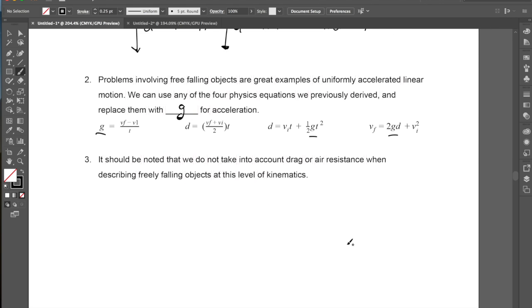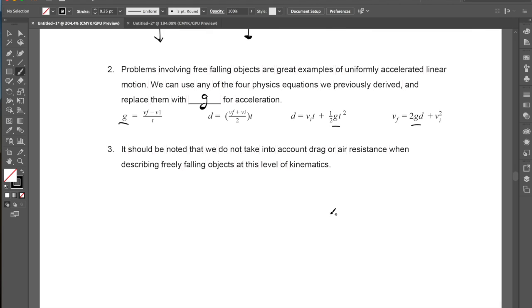Now it should be noted that in kinematics, in one dimension, at this point in physics, we're not going to take into account drag or air resistance when describing freely falling objects at this level. So that is, if we have a large object and a smaller object like a feather, for now we're going to treat them as if we're looking at a no air-resistant situation. So that there's no air resistance acting upwards on these objects. We're just right now going to be focused on the acceleration due to gravity downwards.